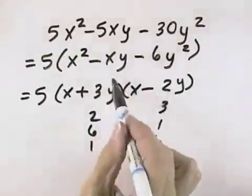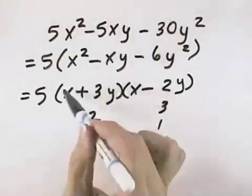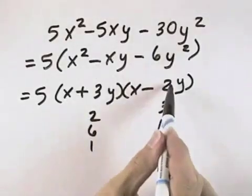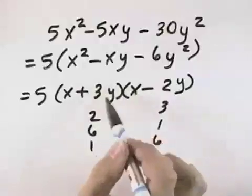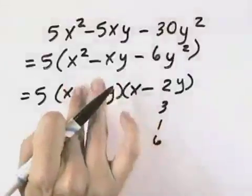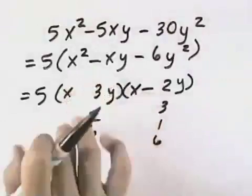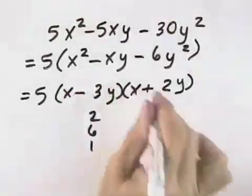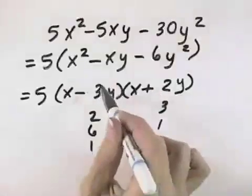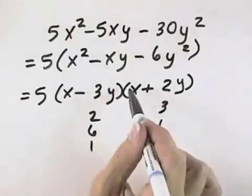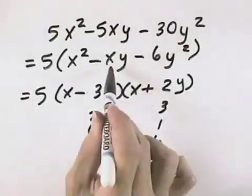Here I can see that my inner term is positive 3xy, and my outer term is negative 2xy. Positive 3 and negative 2 gives a positive 1xy, which means I should have made the other choice — my signs are reversed because I want a negative xy. So if I reverse them, I have negative 3xy plus positive 2xy, which is negative 1xy.